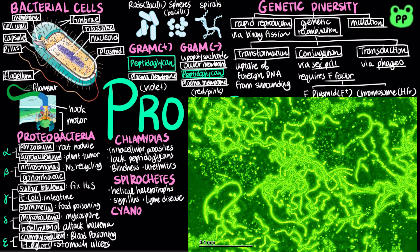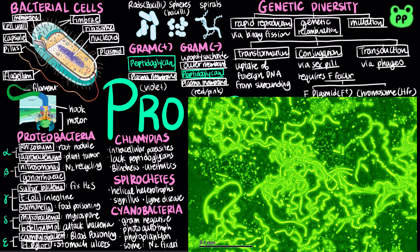Cyanobacteria are a group of gram-negative photoautotrophs that can carry out oxygen-generating photosynthesis. Chloroplasts likely evolved from an endosymbiotic cyanobacterium. Cyanobacteria are a key component of freshwater and marine phytoplankton, the collection of photosynthetic organisms that drift near the water's surface. Some filaments have cells specialized for nitrogen fixation.